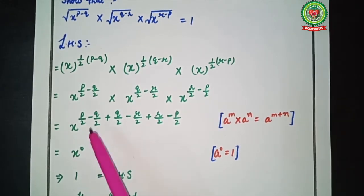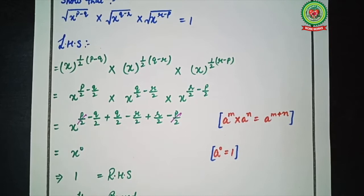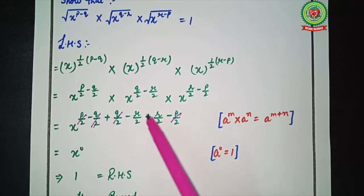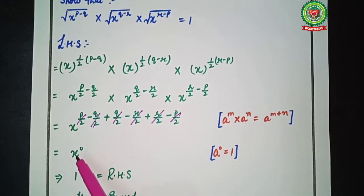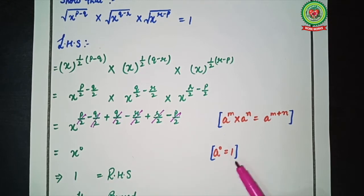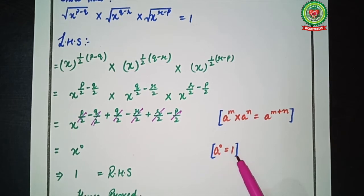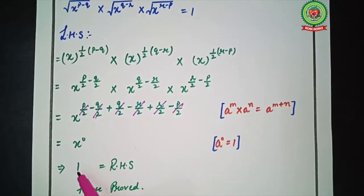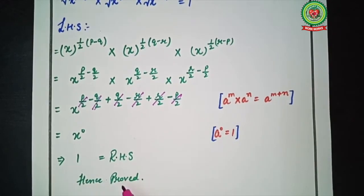Now you can see that p upon 2 is positive and minus p upon 2 is negative, so they cancel. Next, minus q upon 2 and plus q upon 2 cancel. Then minus r upon 2 and plus r upon 2 cancel. We are left with 0, so we have x raised to power 0. By the law that any number raised to power 0 equals 1, that is a raised to power 0 equals 1, we get x raised to power 0 equals 1, which equals the right-hand side. Hence proved.